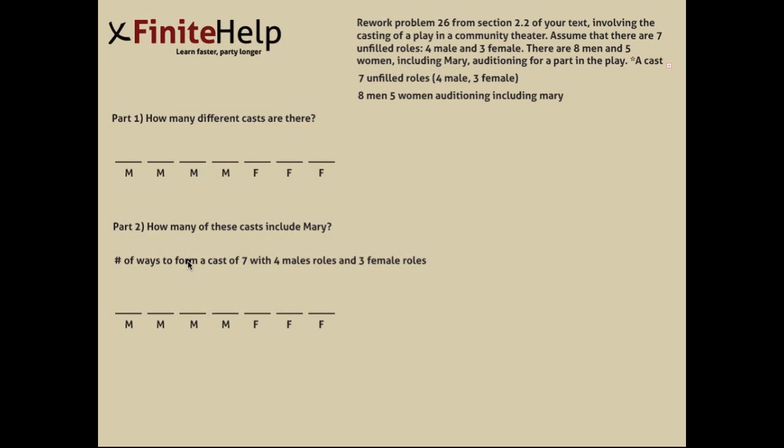A cast consists of an assignment of specific people to specific roles. What that means is you could have all the same people in the play, but if you switch any one of them to a different role, it's a whole different cast. The first part asks us how many different casts there are.